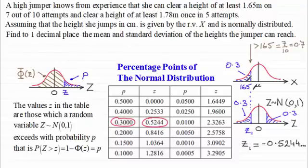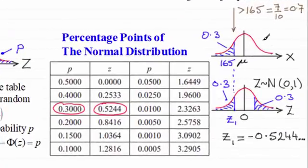Where does that go on this axis here? Well, we're told that she clears a height of 1.78 meters, 178 centimeters then once in five attempts, one fifth in other words, and as a decimal, that's going to be 0.2. So the probability of being greater than 178 is 0.2. So we know we need to shade the area to the right of 178, and it's got to be 0.2.